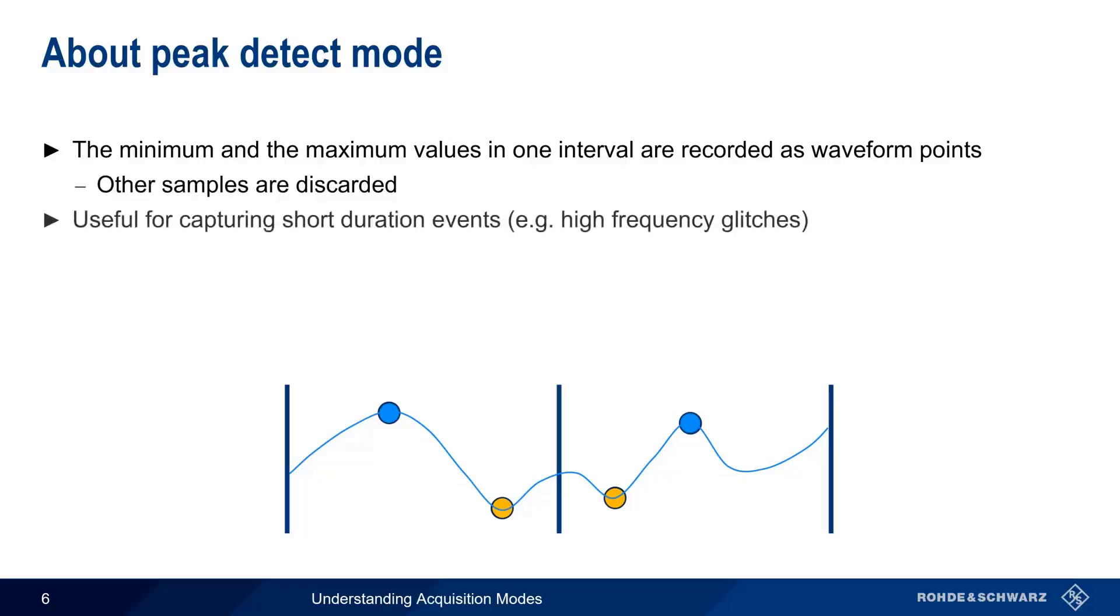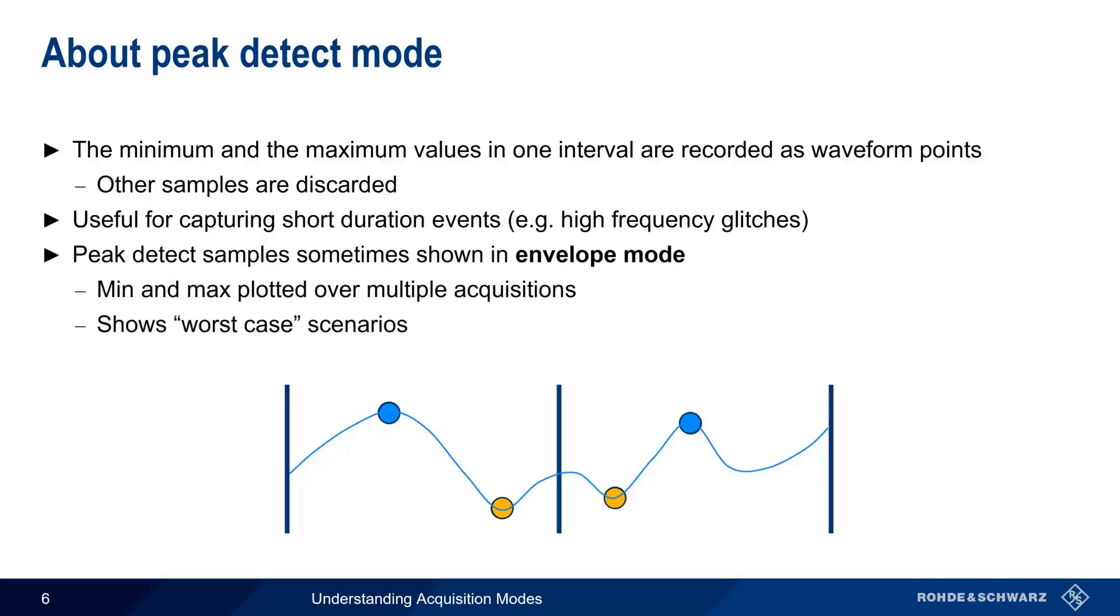Peak detect mode is most useful in capturing short duration events, such as high-frequency glitches or other outliers that might be missed if using the sample mode we just discussed. In many cases, the waveform samples produced by a peak detect mode are displayed in something called envelope mode, in which the max and min values are both plotted together over multiple acquisitions. This is particularly helpful when trying to visualize worst-case scenarios over time.